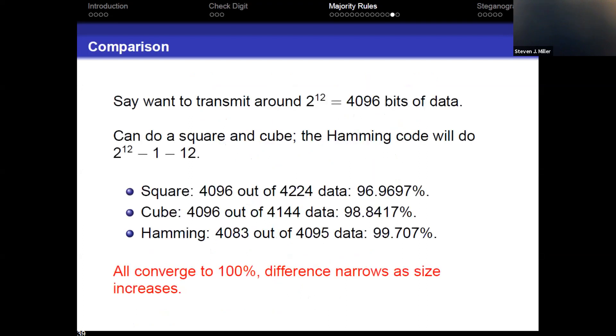So with just seven points, you're already breaking 50%. And of course, there are generalizations of this if you want to have a higher efficiency and use more points. There are also generalizations if you want to be able to correct two bit errors or three bit errors. So say we want to transmit around 4,096 bits of data. It's always nice to work with powers of two. We could do a square. We could do a cube. We could look at a corresponding Hamming code. And let's just get a sense of the comparison. So with a square, we have an efficiency of 4,096 out of 4,224 pieces of data for 96.969%. For the cube, 4,096 out of 4,144 are data, about 98.8417%. And using the corresponding Hamming code, 4,083 out of 4,095 for 99.707%. So the Hamming code is more efficient.